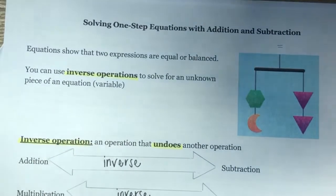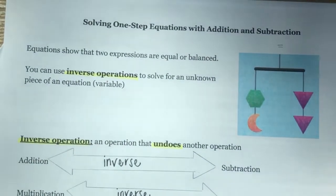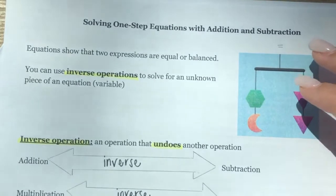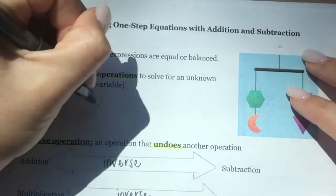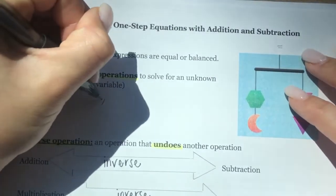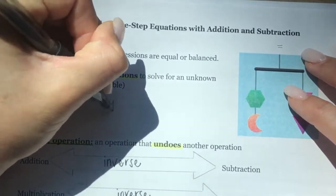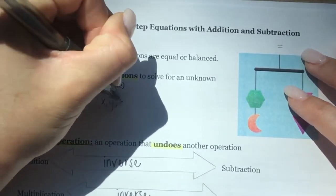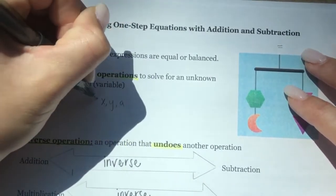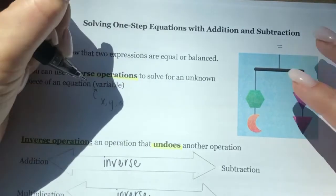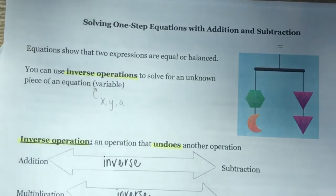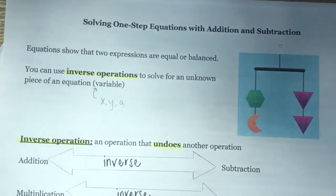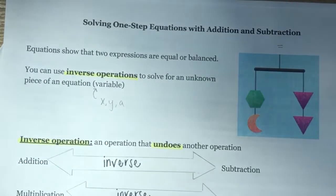A variable is just an unknown letter in an equation that we need to find — X, Y, and A are some common ones, but it can truly be any letter. We just try to avoid letters that also look like numbers.